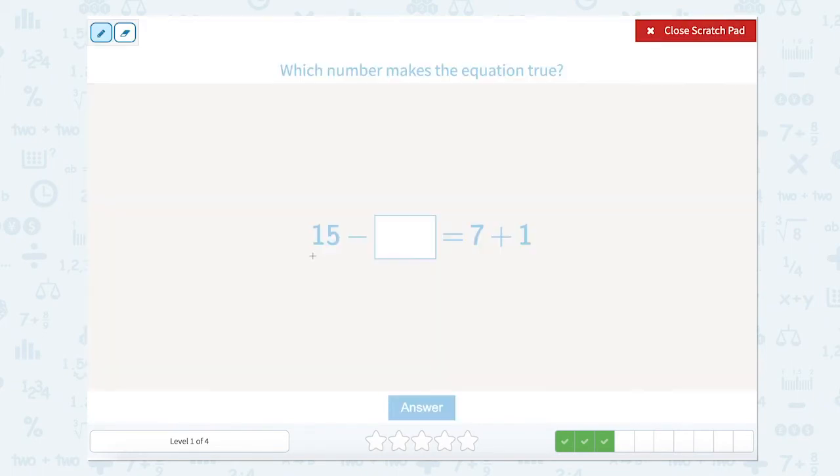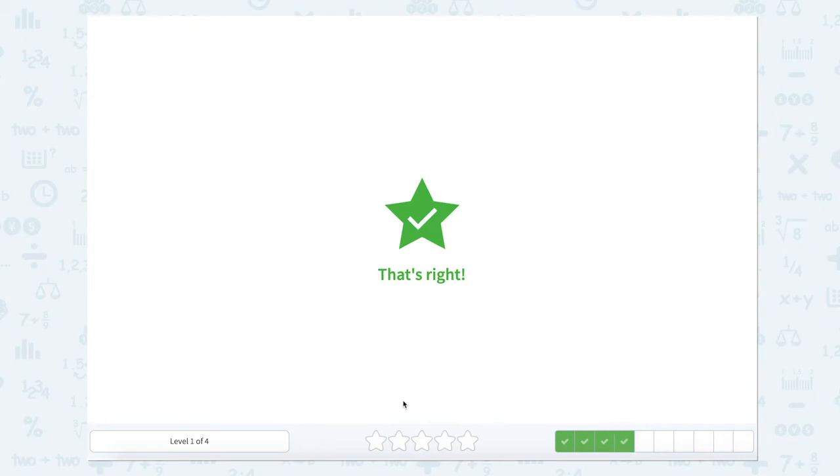Now we're going to do the same thing. We're going to look at the two sides of the equal sign. We have one side here that we don't know and we have this side here which has two parts. So 7 plus 1 equals 8. So 15 minus something equals 8. Well, I know in the fact family 15, 8 and 7. So 15 minus 7 equals 8. That's right.